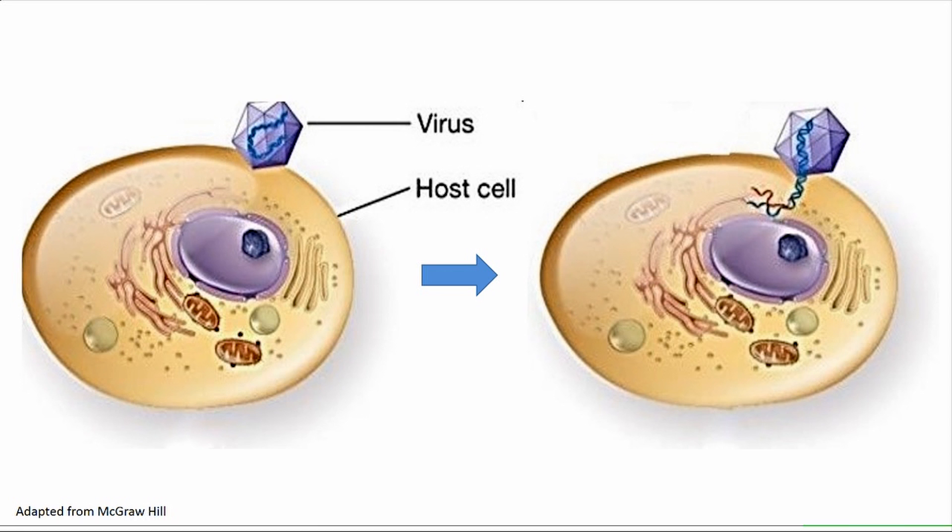Once the virus is inside, it can hijack the cell into making new viral nucleic acids and proteins. Sometimes the new viral particles will lyse out of the cell, killing it. This is where another form of gene therapy can occur, in which the virus infects but selectively kills cancer cells.